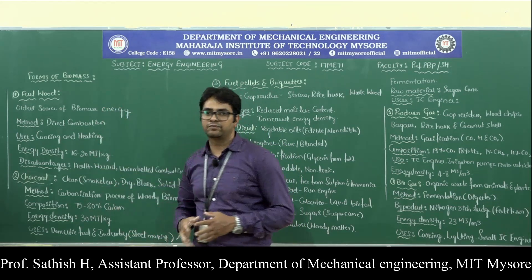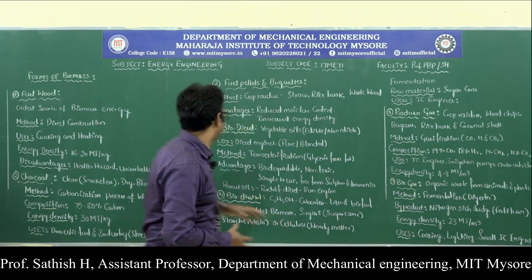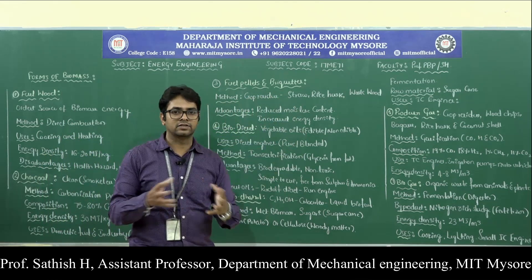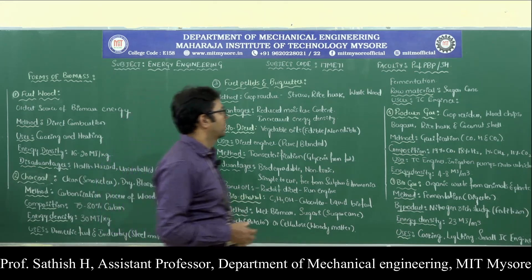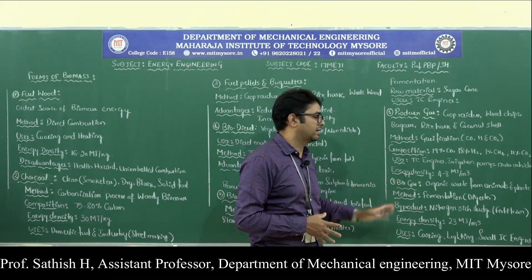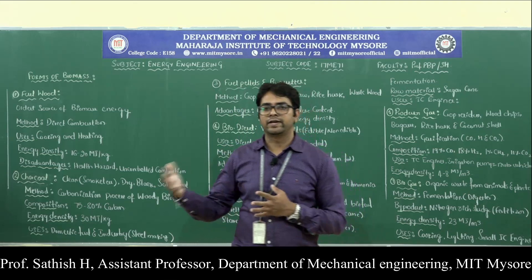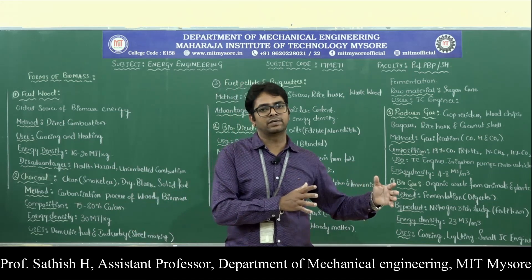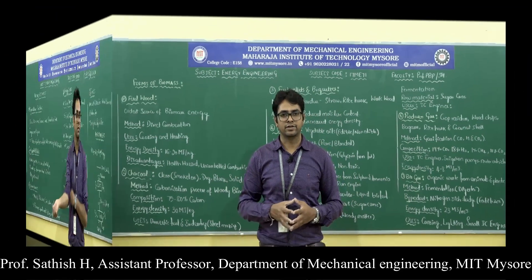So we discussed different types of biofuels: solid, liquid, and gaseous. Fuel wood, charcoal, and fuel pellets and briquettes are solid biofuels. Biodiesel and bioethanol are liquid biofuels. Producer gas and biogas are gaseous biofuels. Essentially, we convert biomass into useful forms of fuel — solid, liquid, or gaseous biofuels.